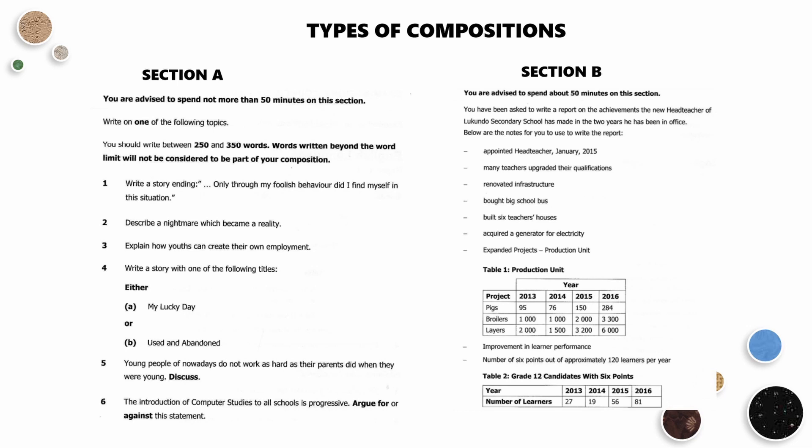Okay, so this is the paper structure. In section A, you're required to answer one question. And then in section B, the question is compulsory. Alright, so for section A, you're certain that in each year a question will come on argumentative composition, discursive composition, narrative compositions, and so on. Therefore, it's important that by term 3, grade 12, you're comfortable with at least two types of compositions. It could be discursive, argumentative, narrative, and so on.